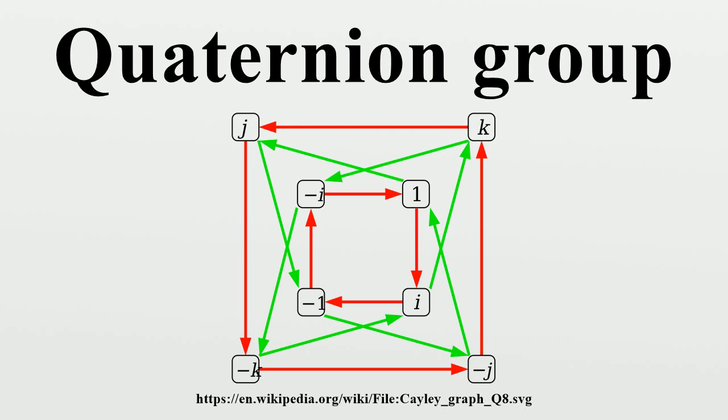the Q8 group has the same order as the dihedral group D4, but a different structure, as shown by their Cayley and cycle graphs. The dihedral group D4 arises in the split quaternions in the same way that Q8 lies in the quaternions.